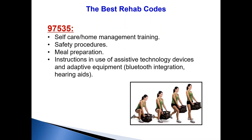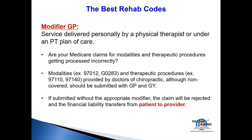Code 97535 is self-care and home management training. This is done just once or twice — sparingly — unlike the other codes which can be done three times a week. It's used to show patients how to do things at home: how to bend, lift, exercise at home, rake leaves, shovel snow, sit at a computer, or get in and out of a car or bed. The patient performs the activity while you watch; you demonstrate and then they show you. Most health plans pay for it.